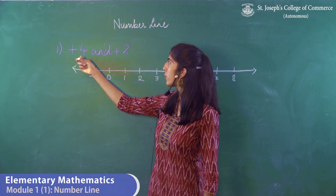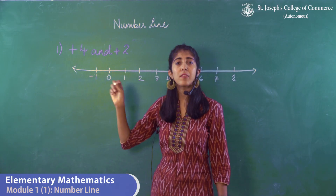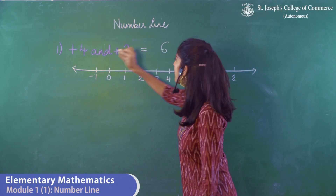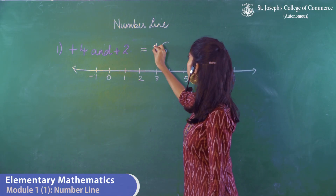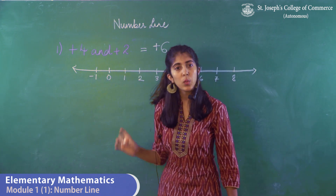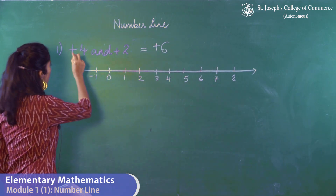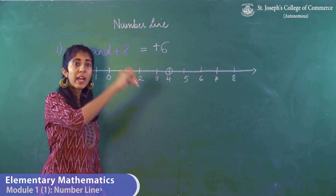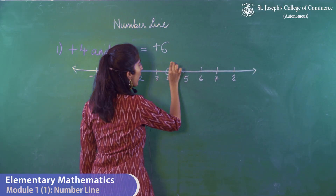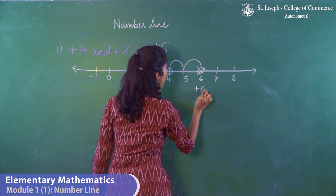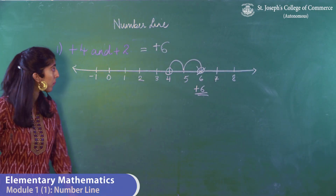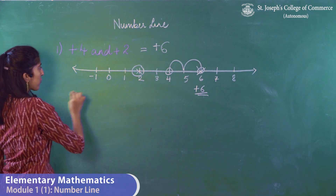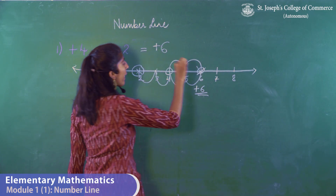Moving on to the second sum: plus 4 and plus 2. Both numbers have the same sign, so the rule says you need to add. The answer is 6 and since both signs are positive, the answer is also positive. On the number line, I start at plus 4 and move 2 places to the right, reaching 6. If I start with plus 2 and move 4 spaces right — 1, 2, 3, 4 — I still reach plus 6. This is how you solve when both numbers have the same sign.